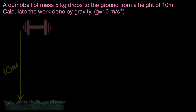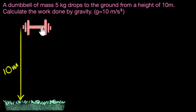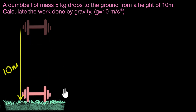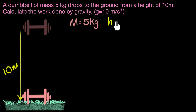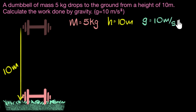Let's draw the situation. We have a dumbbell whose mass is five kilograms. It's dropped from a height of 10 meters, so it just falls down. We need to calculate the work done by gravity. The mass is given to be five kilograms, the height is given to be 10 meters, and g is given to be 10 meters per second squared.